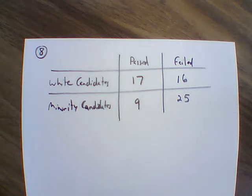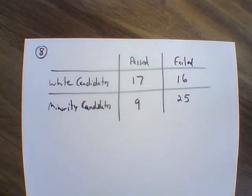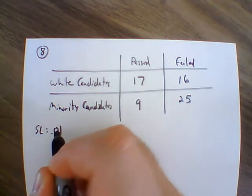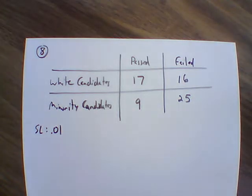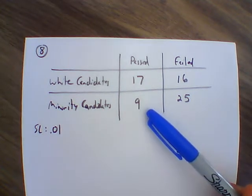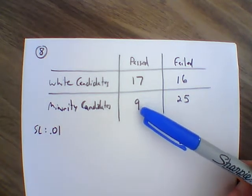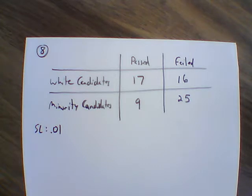The U.S. Supreme Court considered a case involving the exam for firefighter lieutenant in the city of New Haven, Connecticut. Results from the exam are shown in the table below. Is there sufficient evidence to support the claim that the results from the test should be thrown out because they are discriminatory? Use a 0.01 significance level.